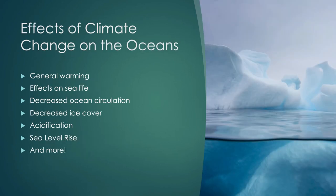Let's talk about the effects of climate change on the oceans. These are the six topics we're going to cover today: the oceans are warming in general and this can affect sea life; ocean circulation is going to be changed; ice cover at the poles is decreasing; something called acidification is occurring; and sea level is rising. These are six big topics — there are other ones, but these are the six we'll talk about in this lecture.